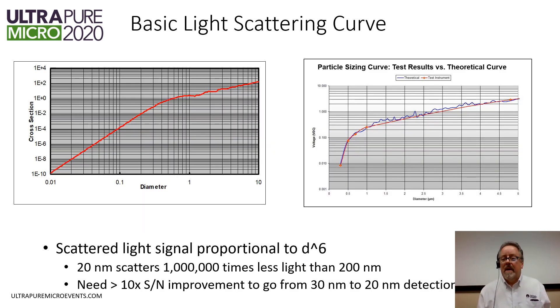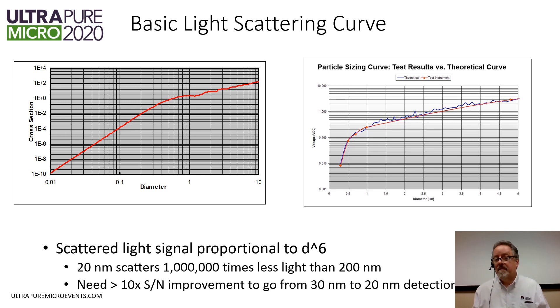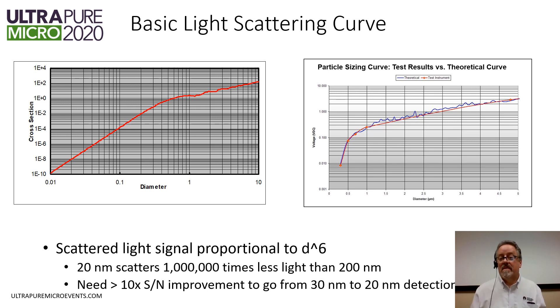Looking at light scattering — what's creating this signal — in our case we're looking at particles that are much smaller than the wavelength of light, so we're looking at Rayleigh scattering. This means that the scattering intensity is proportional to the diameter of the particle to the sixth power.